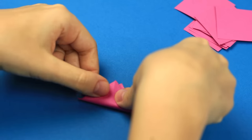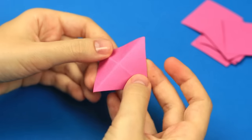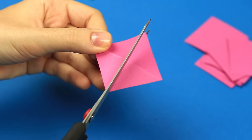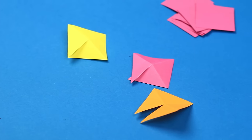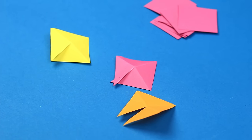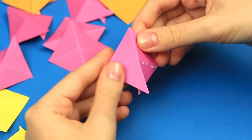Fold diagonals to form a cross. Make a cut up to the center. Attach the sides to shape a pyramid.